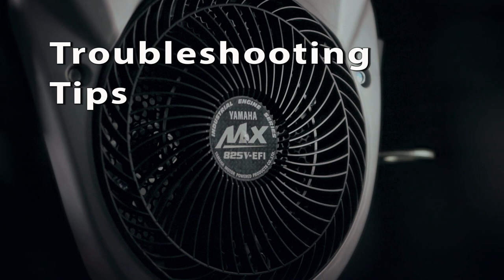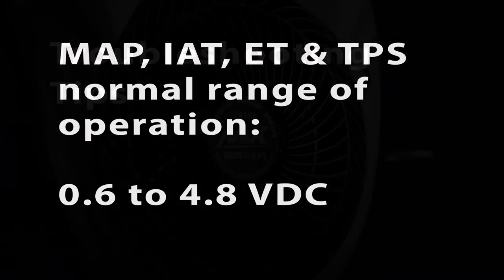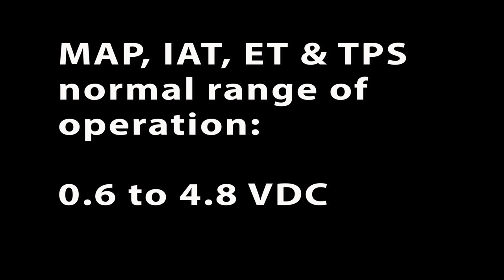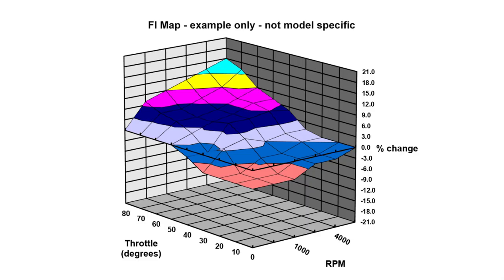One important fact that mechanics must always keep in mind, if the voltage signal from the map, intake air temperature, engine temperature, and throttle position sensor is within the normal range of operation, about 0.6 to 4.8 volts DC, the ECU will use that input and follow the instructions in the FI map without question. There is no deviation from this map. The performance of the engine could be affected, and there may or may not be an error code indicated.